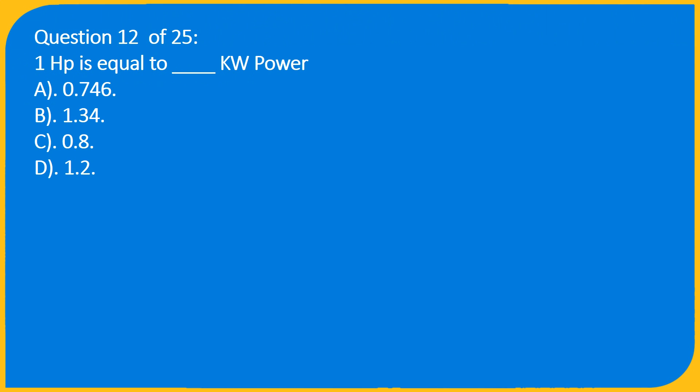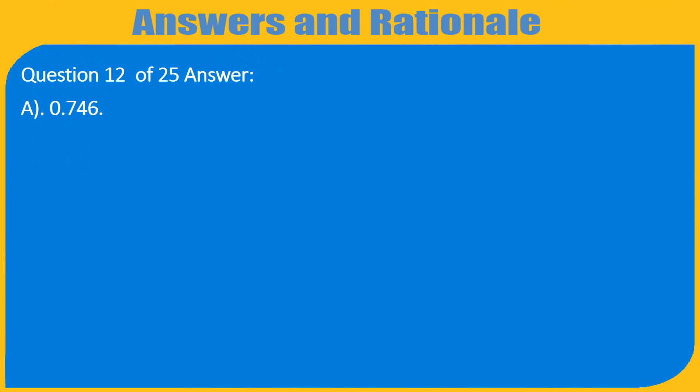Question 12 of 25: One horsepower is equal to ___ KW power — A. 0.746, B. 1.34, C. 0.8, D. 1.2. Answer: A. 0.746.